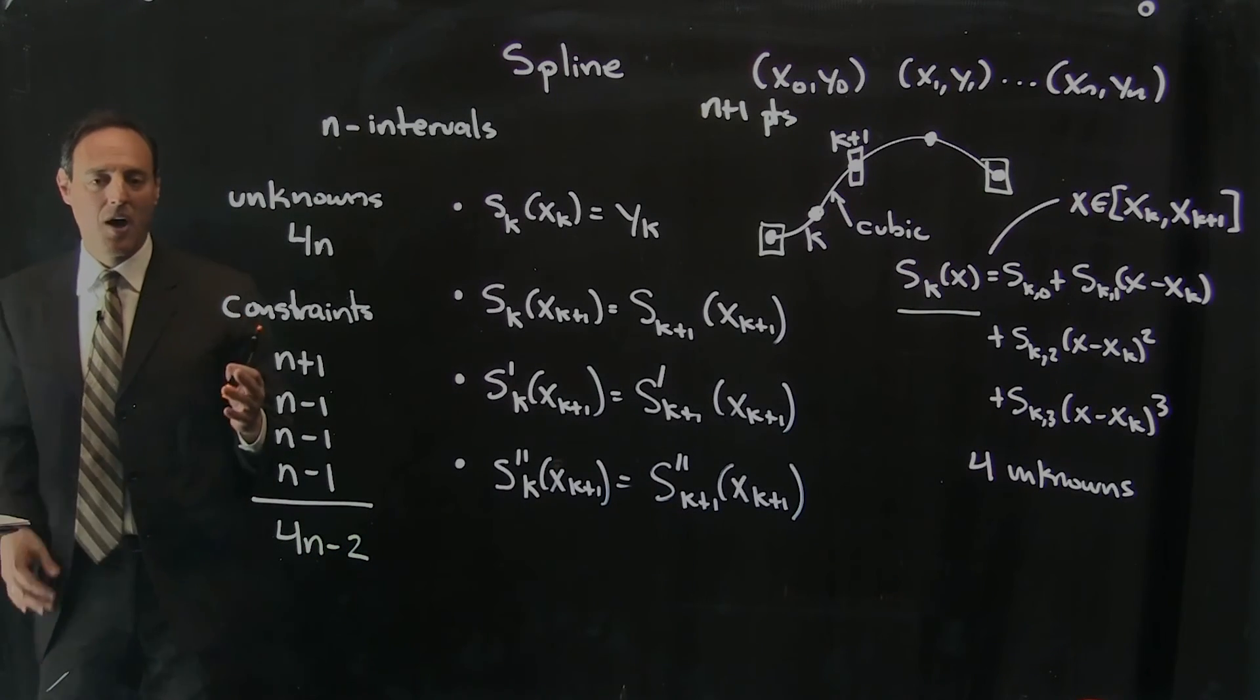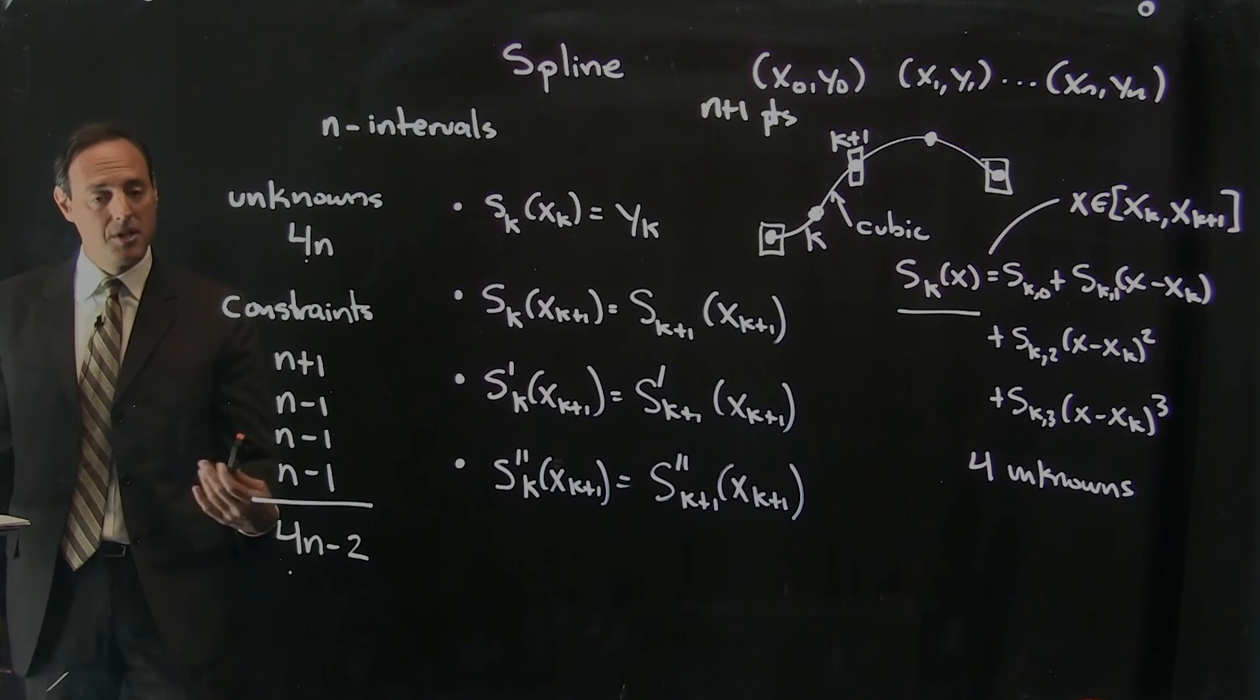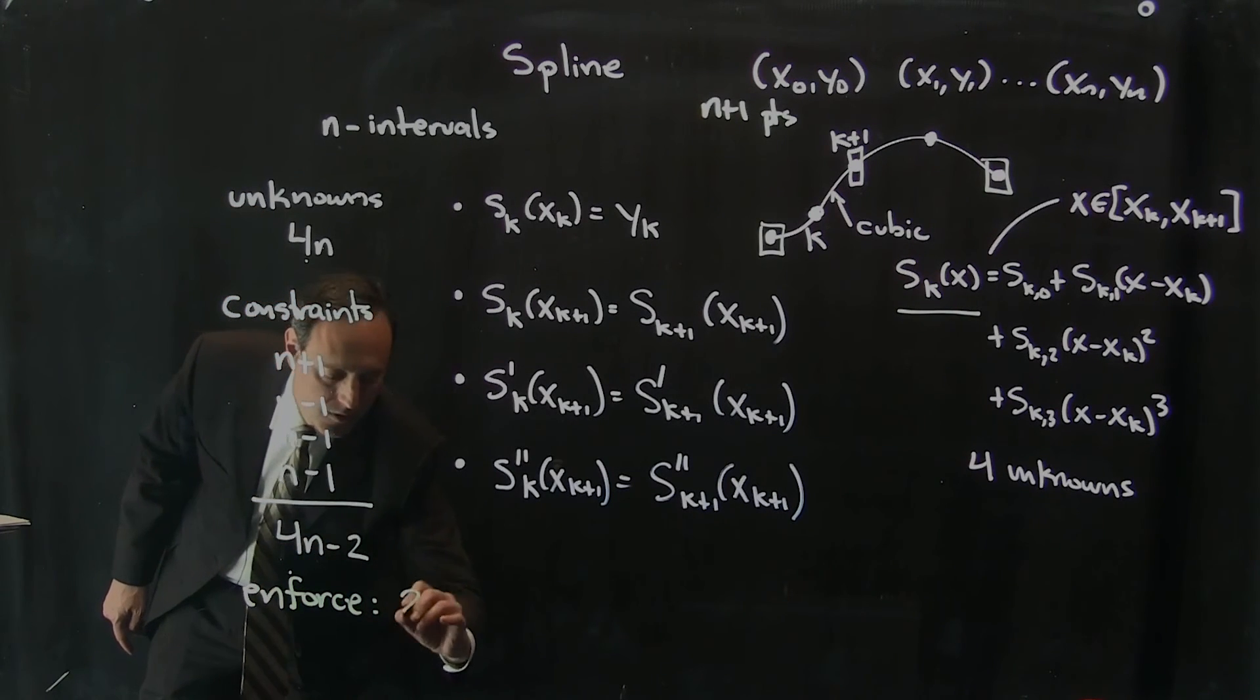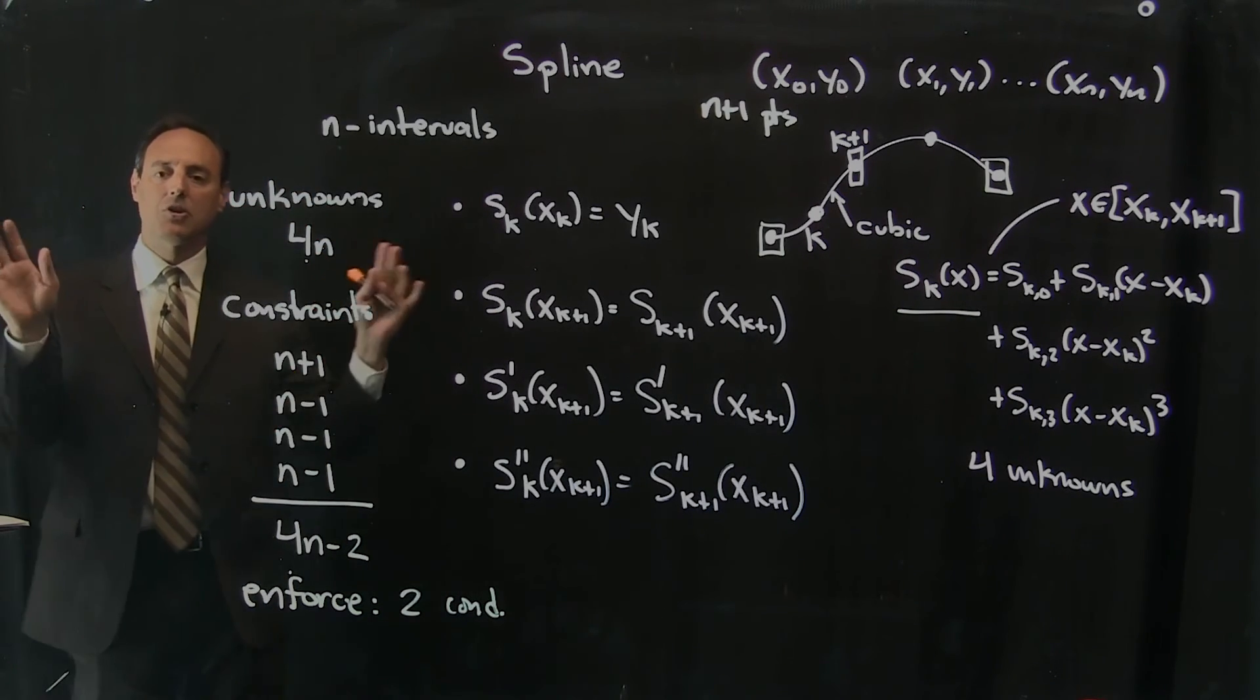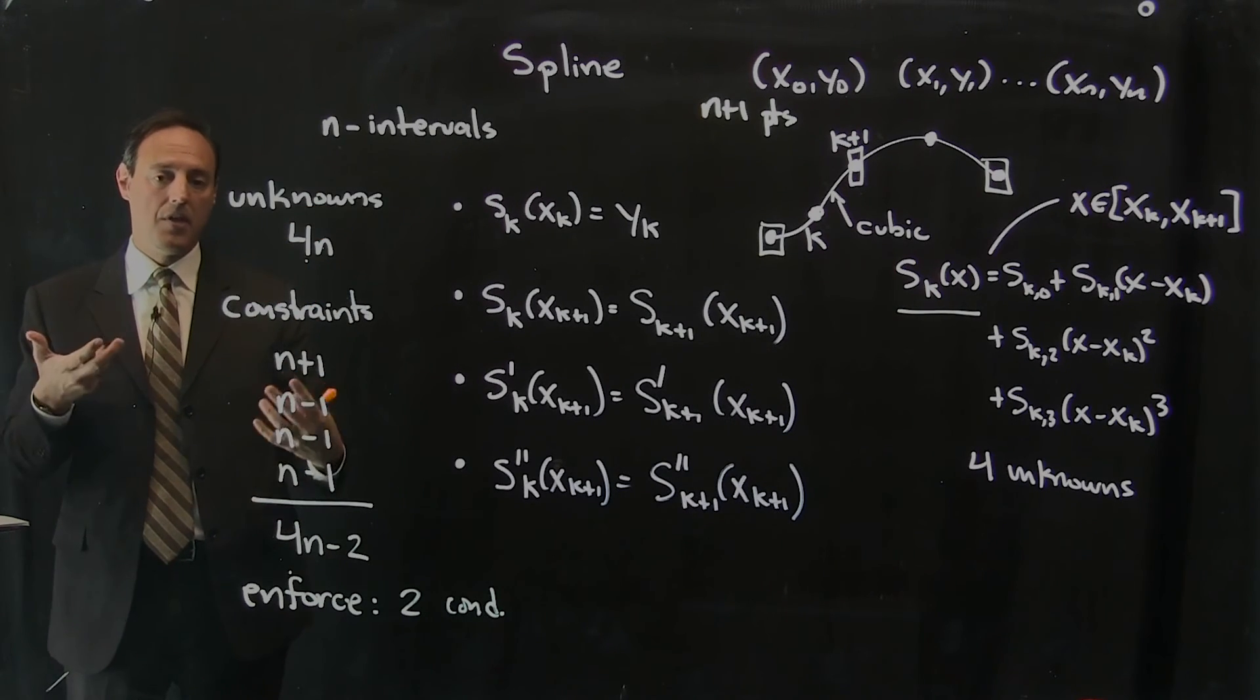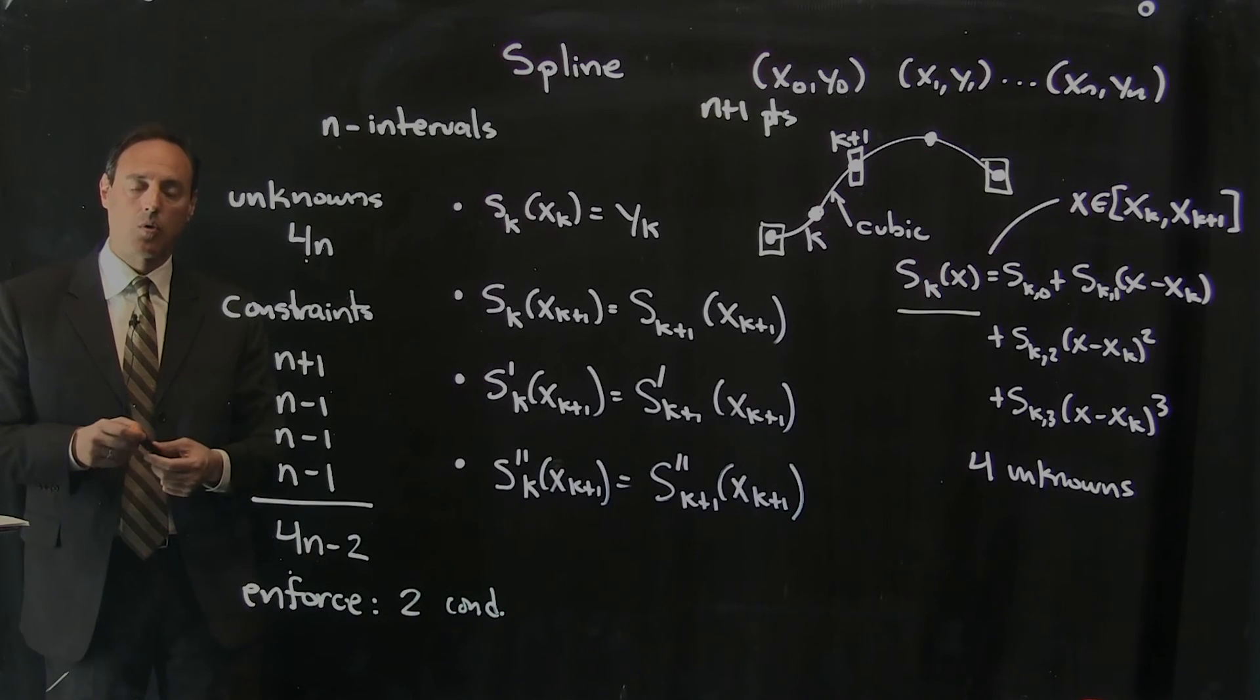Uh-oh. So here's the problem. I have this many unknowns and this many constraints. So it's an underdetermined system. So typically what happens in splines is that people enforce two more conditions. Oftentimes they'll say things like, oh, at the ends, let's make the second derivative zero. So the far end on the right and on the left, I'll make the second derivative zero, which gives me two extra constraints. And then I have a match of the unknowns to the constraints. So all of a sudden I have a consistency across the whole thing.